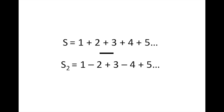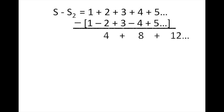We're going to do S minus S2, so we take our first string of numbers minus our second string of numbers: 1 plus 2 plus 3 plus 4 plus 5 and so on, minus the bracket 1 minus 2 plus 3 minus 4 plus 5 and so on. 1 minus 1 gives us nothing. 2 minus a negative 2 is a positive 4. 3 minus 3 is nothing. 4 minus a negative 4 is 8. 5s give us nothing. 6s will give us 12, and so on.